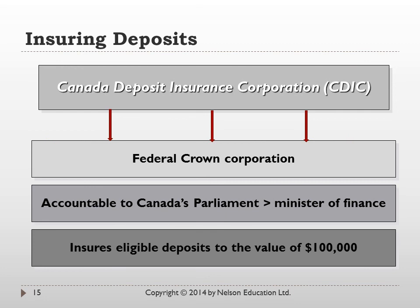The Canadian Deposit Insurance Corporation (CDIC) is a crown corporation established in 1967. Its goal is to provide a measure of protection to Canadians. CDIC will insure eligible deposits up to $100,000. In the event of the collapse of a bank, if you've got money invested with a chartered bank and it can't pay your deposit back, Canada Deposit Insurance Corporation will guarantee you get your funds back up to the maximum amount of $100,000, creating safety and stability in the Canadian banking system.